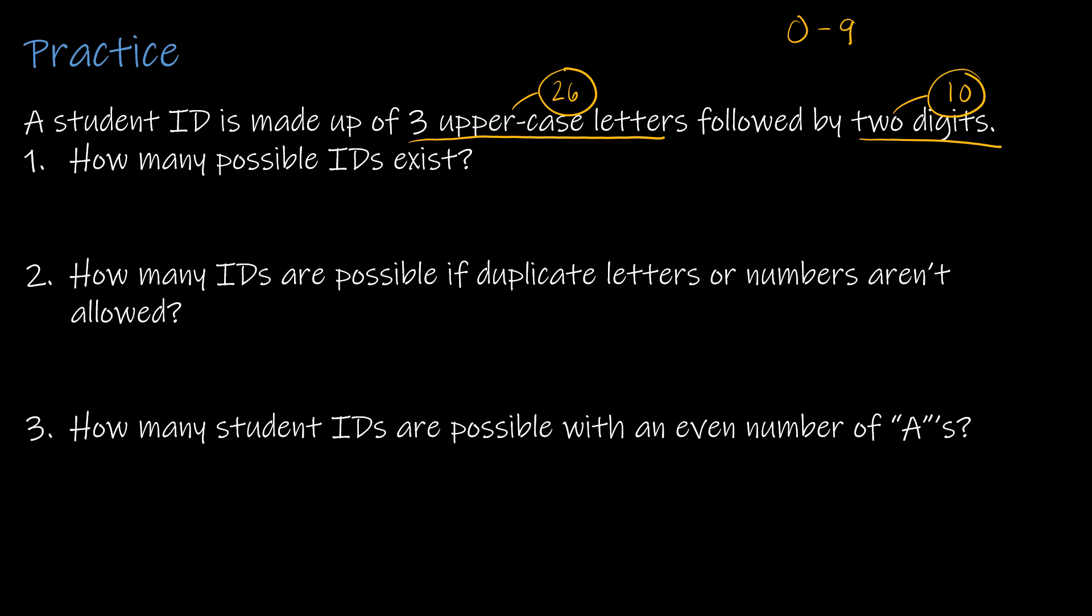So how many possible IDs exist? You might be like, hey, this is super easy. It's 26 to the third times 10 squared, and that's correct. But if you need to, then please just write it out like this and say, well, the first option, there's 26 different letters I can use. And for the second place, there are 26 letters, and the third place, there are 26 letters. And then there are 10 digits and 10 digits. So that's my solution. Now, this solution is perfectly acceptable. If the product of all of those values is one that's easy to find, I encourage you to go ahead and provide me with both solutions. So this is 1,757,600, also known as 26 to the third times 10 squared.